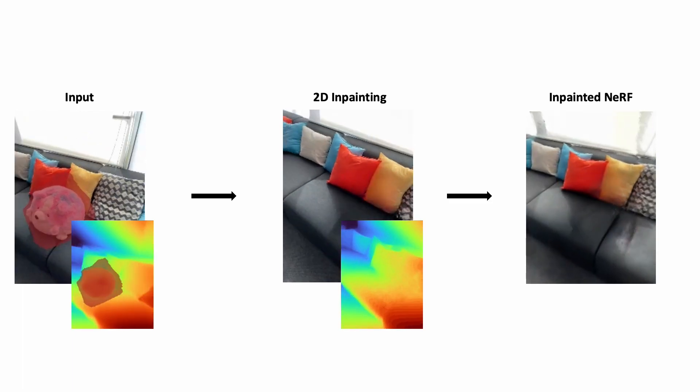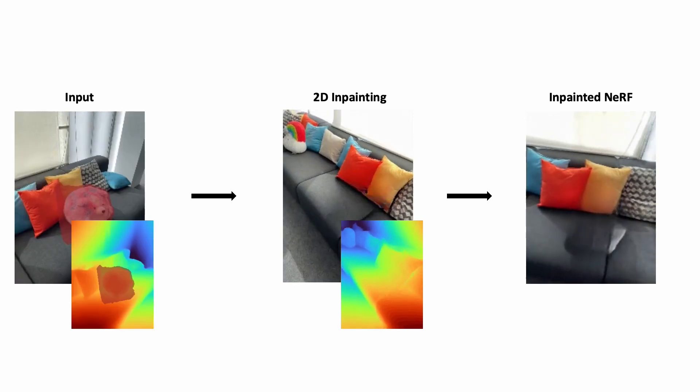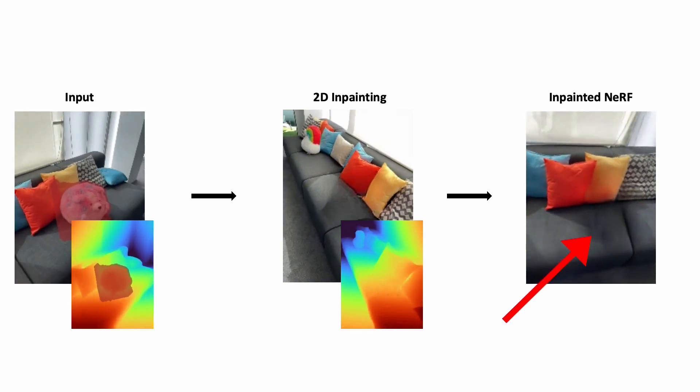If we train a NeRF on these inpainted images, the result is blurry and unconvincing, as you can see on the right here.